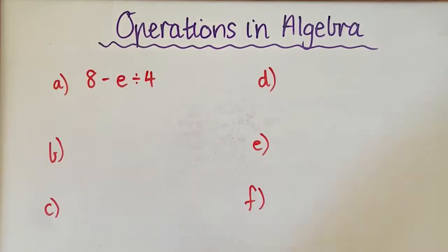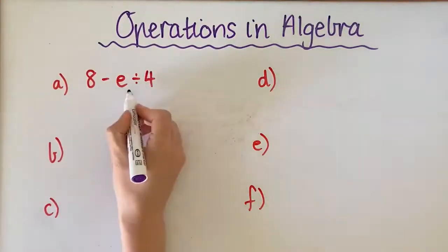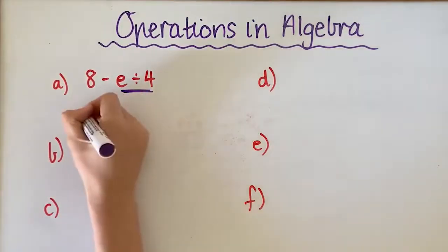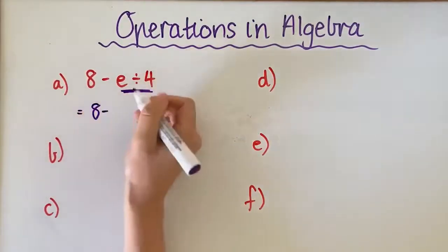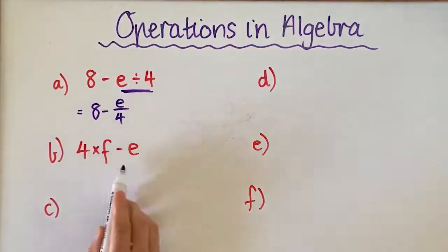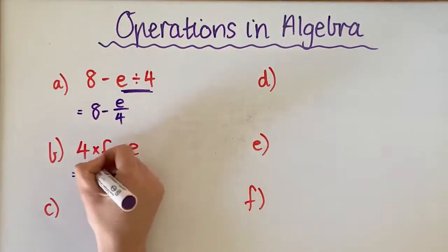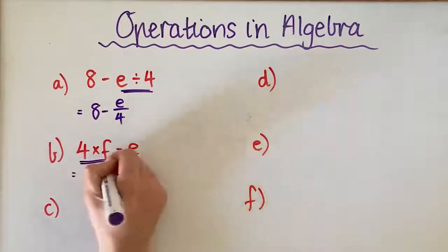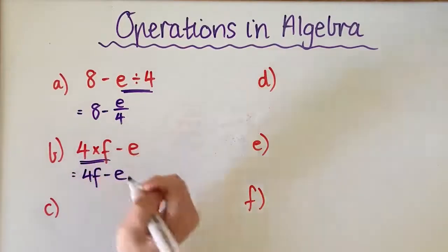So for this first one here, 8 minus E divided by 4, these get combined together because we keep the negative sign and E gets written over 4. So 4 times F minus E, these get combined together. So we get 4F minus E.